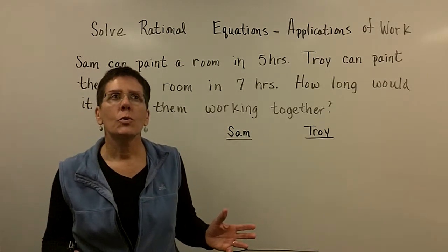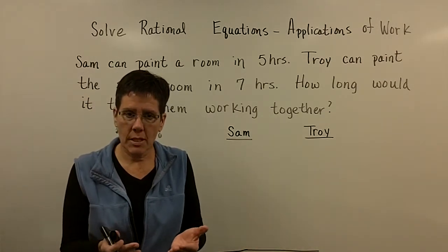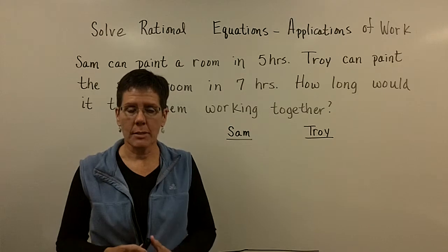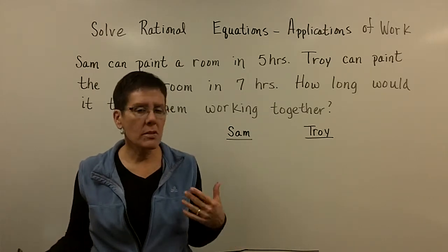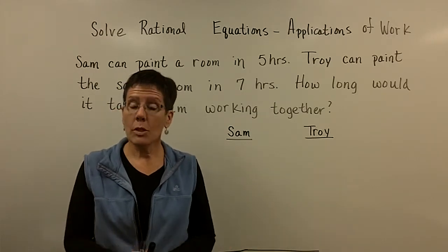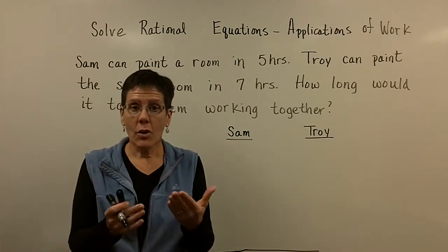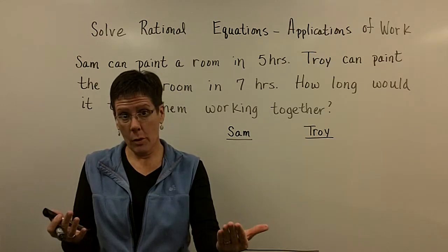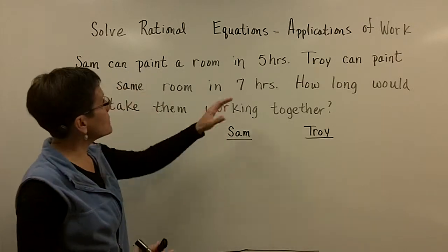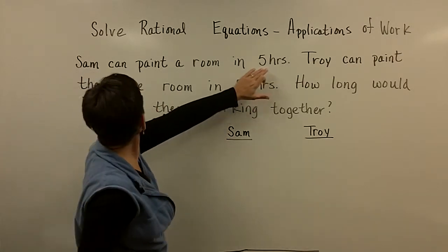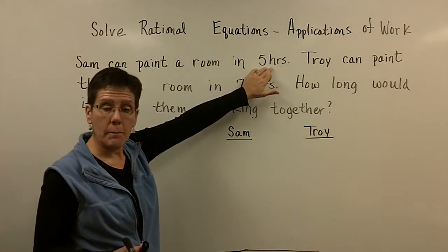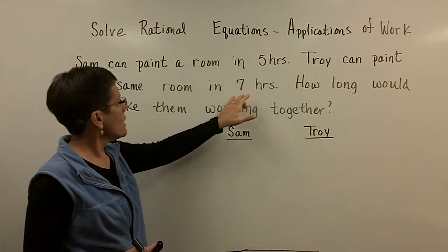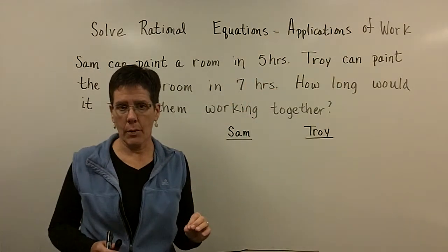It's a situation where you take two people and put them together to complete a project. They don't work at the same rate. One person is slower than the other. And so when you put them together, you're going to have a faster and a slower person working. In this particular case, we're going to have Sam, who can complete a project in five hours, painting a bedroom, and Troy, who can do it in seven hours.